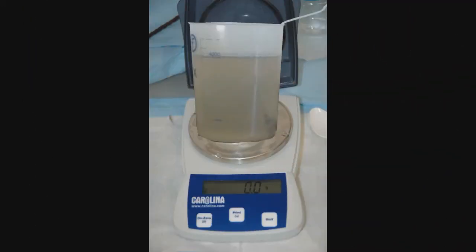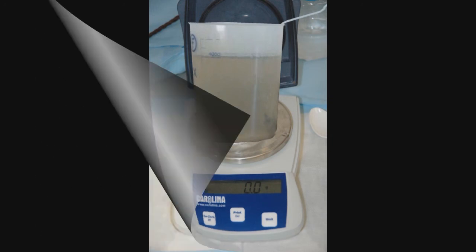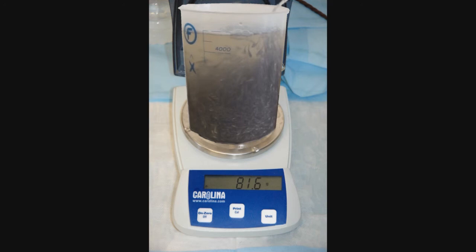Back in the hatchery, we place a large beaker with water on the scale and press the tare or zero button. We then add fish, being careful not to add water, until the scale reads 81.6 grams. We now have the 1,200 fish we need for stocking and are confident they will have good survival rates because we minimized their handling and the time it took to count them.